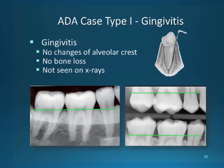Gingivitis does not appear in radiographs. It is an infection of the tissue and does not cause bone destruction. The ADA has labeled gingivitis as type 1. The alveolar bone in the interproximal areas has not been resorbed or affected. We can see the cortical plates fully formed, leaving the alveolar crest in natural condition.